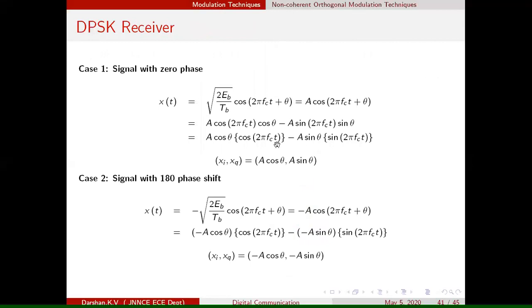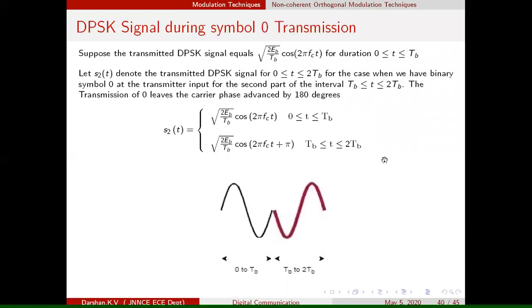Mathematically, during any time interval, during 0 to TB you have one signal and during the other time interval you have a phase-shifted signal. Therefore, at any time instance, only two types of waveforms are possible: the in-phase waveform and the out-of-phase waveform.